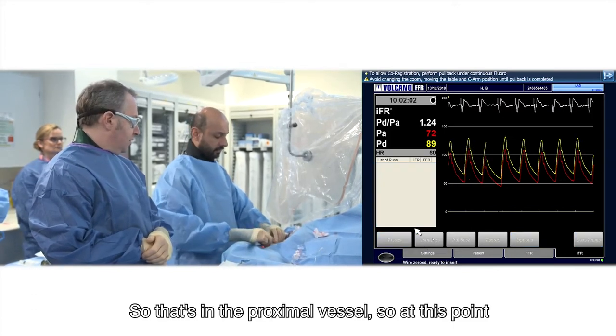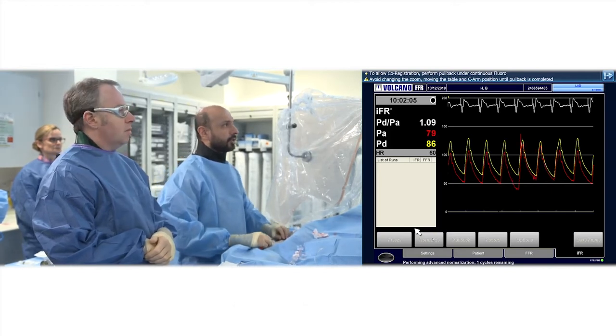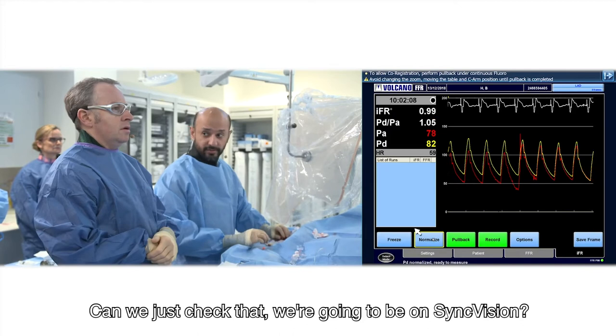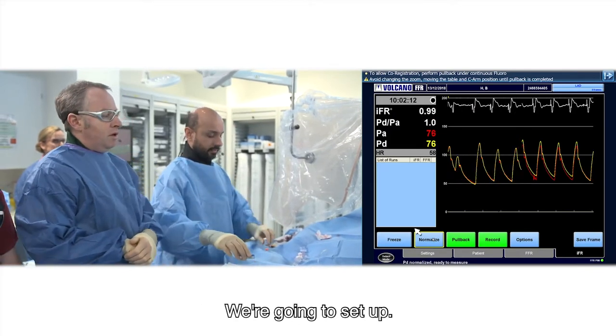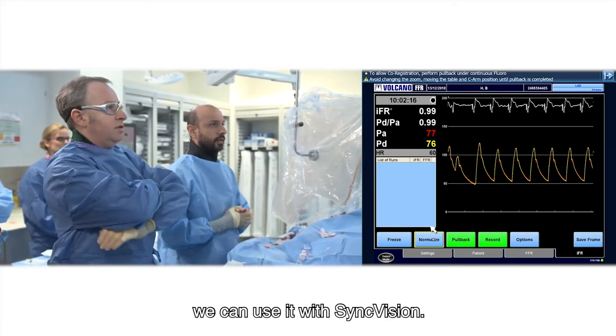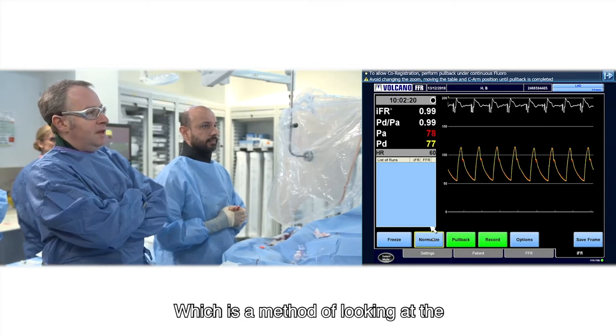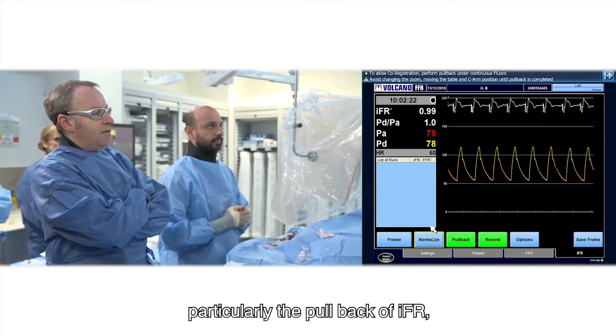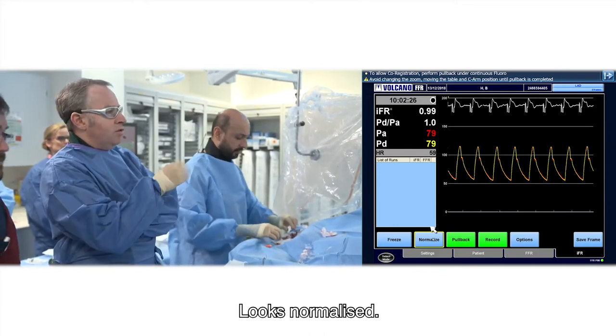So that's in the proximal vessel, so at this point we'll just gently bring the introducer needle back. Can we just check that we're going to be on sync vision? The great thing about the Verato wire is that we can use it with sync vision, which is a method of looking at the pullback of IFR to understand where the step ups are. Looks normalized.